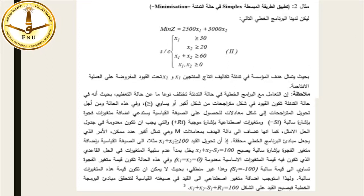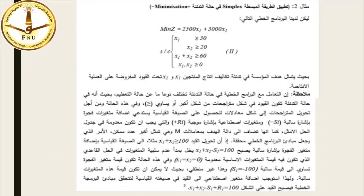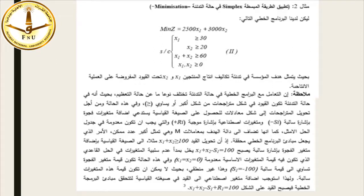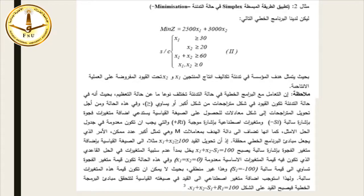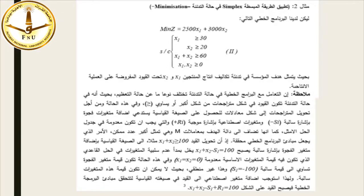متغيرات Rj يجب أن تكون معدومة في جدول الحل الأمثل، كما أنها تُضاف إلى دالة الهدف بمعاملات M التي تمثل أكبر عدد ممكن. فمثلاً تحويل القيد X1+X2 ≤ 100 إلى الصياغة القياسية بإضافة متغير الفجوة بإشارة سالبة يصبح: X1+X2-S1=100. ولتحقيق مبدأ عدم السلبية يستوجب إضافة متغير اصطناعي ليصبح: X1+X2-S1+R1=100.